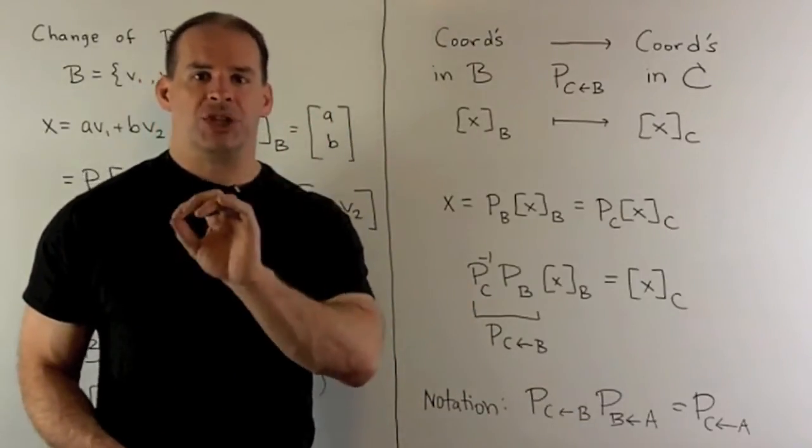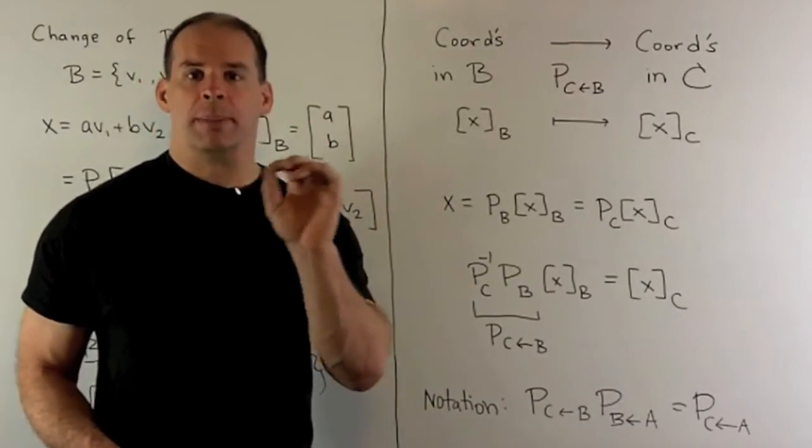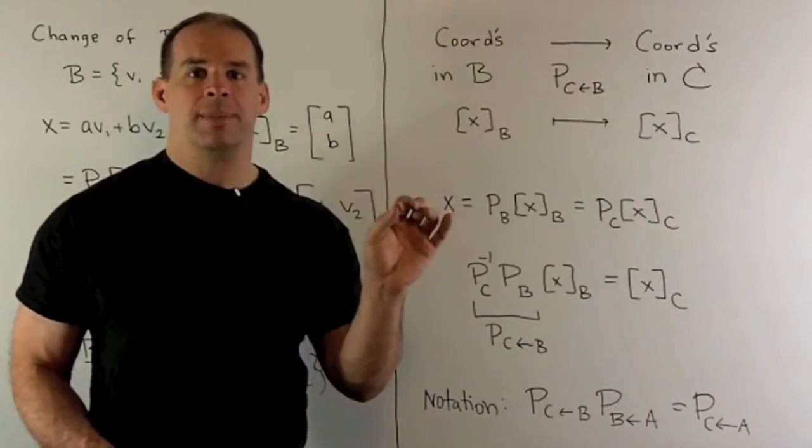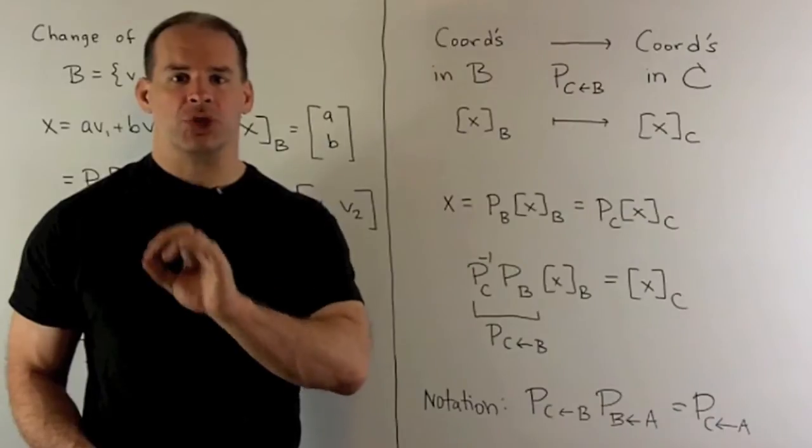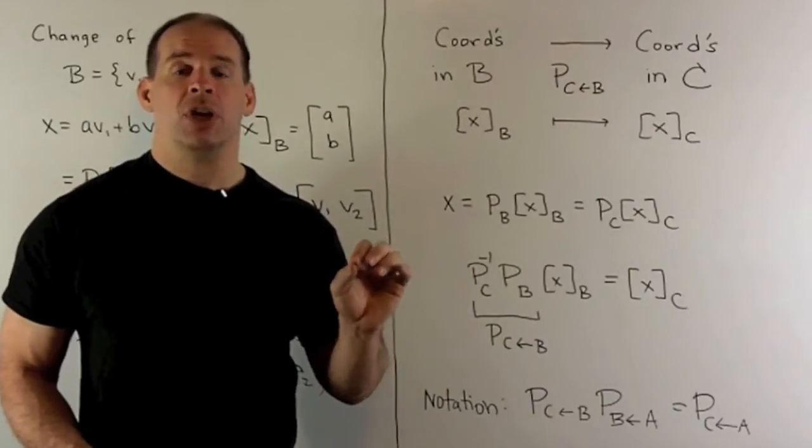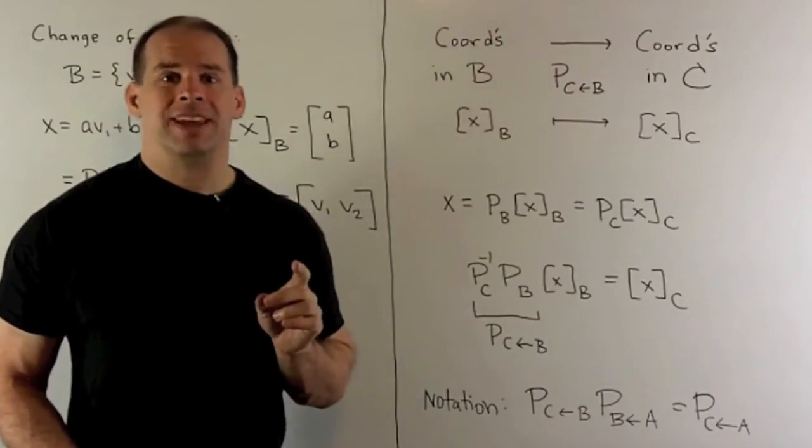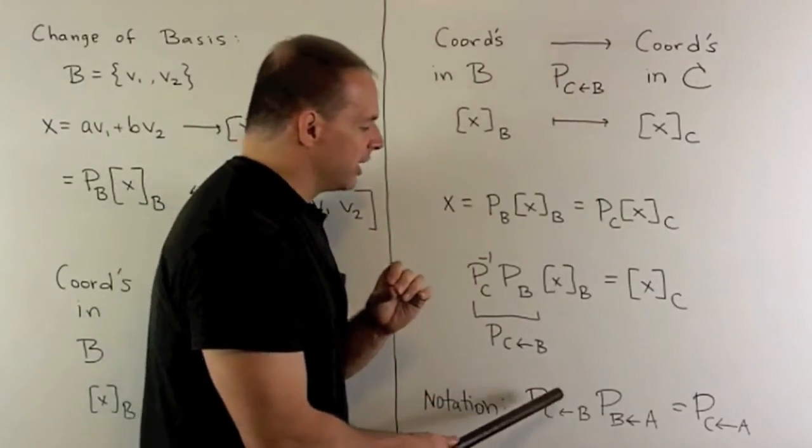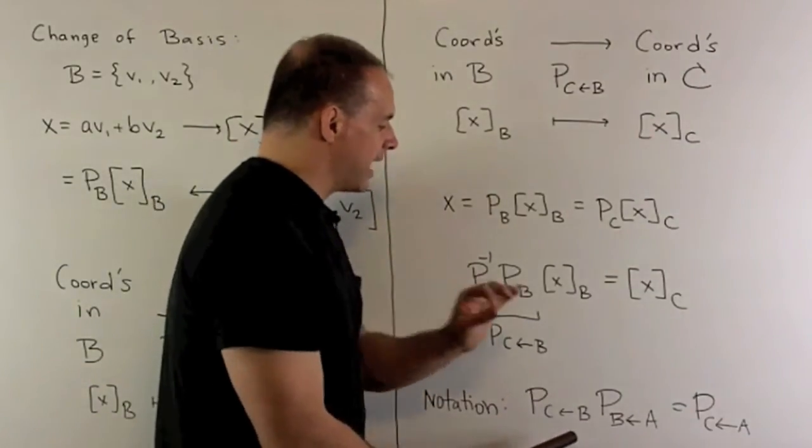If we do a composition of change of basis, so it's just going to be multiplying matrices together, like go from A to B to C, that should be the same as going from straight A to C. You can check that that's going to work out using your definition. And the notation is just take the terms on the inside and cancel them out.